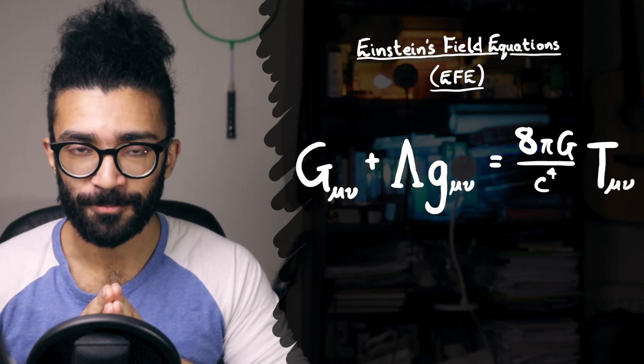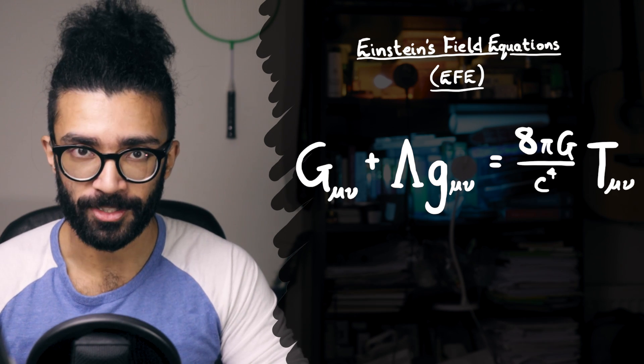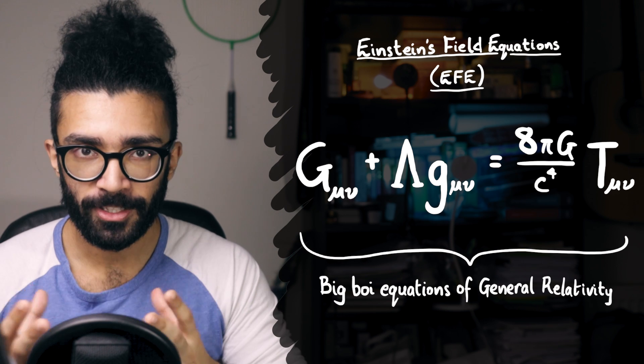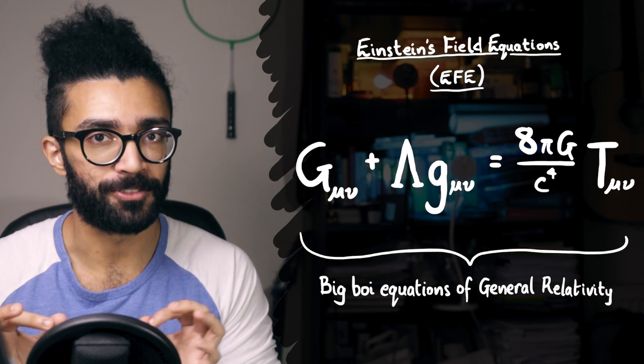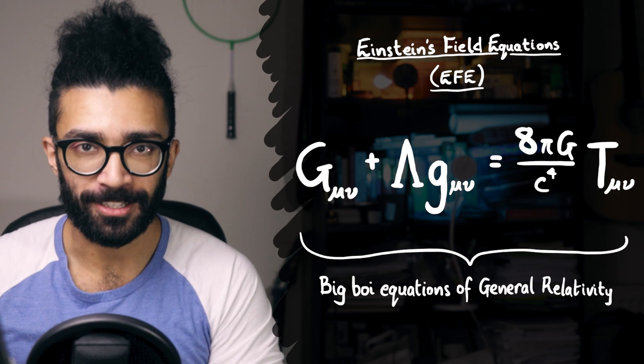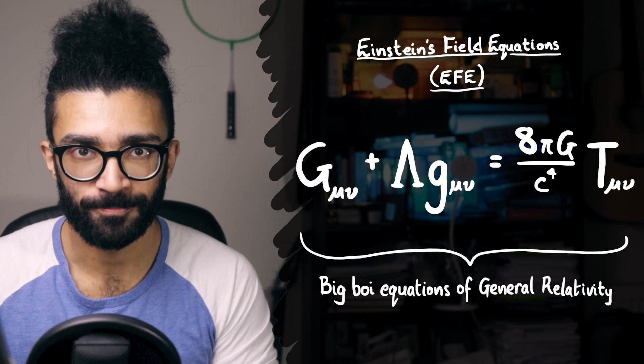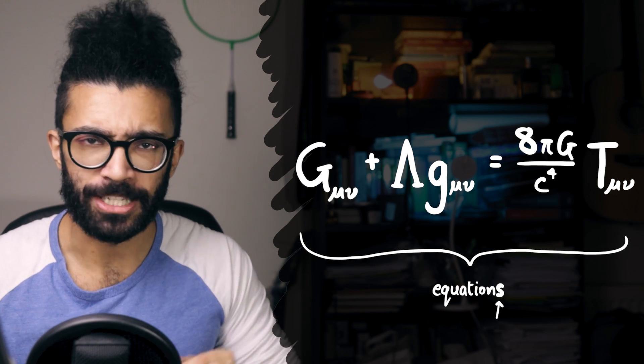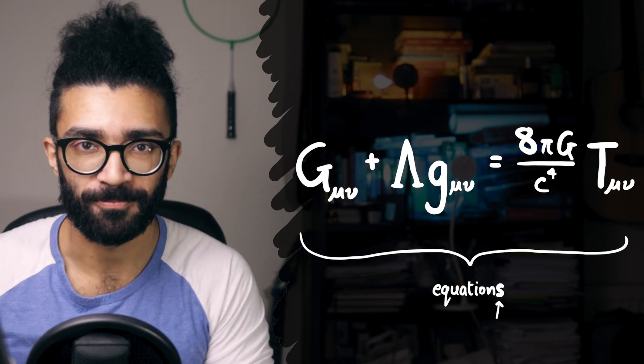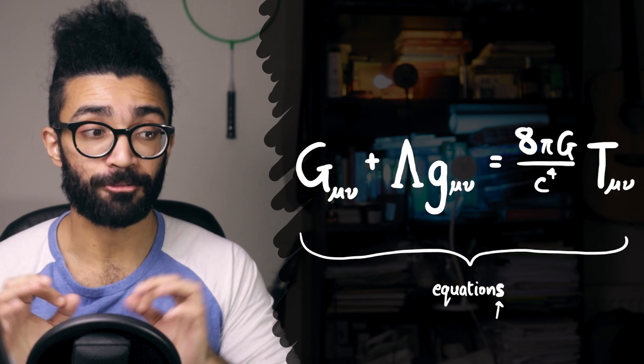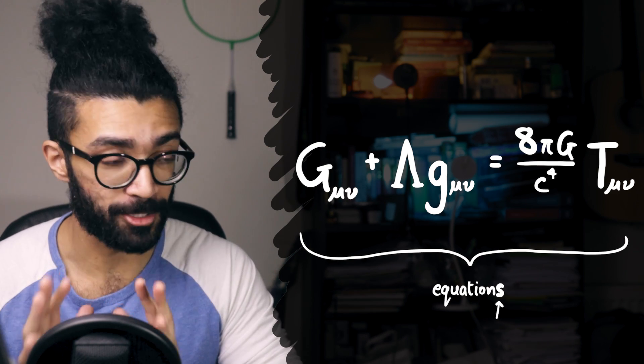The first thing that we need to understand is that the Einstein field equations are essentially the governing equations in the theory of general relativity. They're basically the big boy equations that relate some of the most important concepts in the theory of GR. Now notice how I keep saying equations rather than equation.